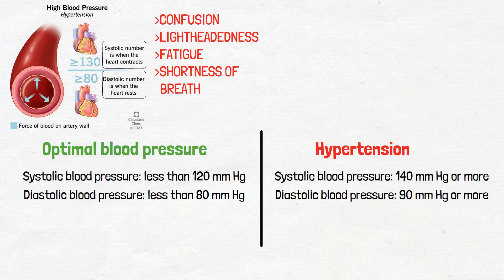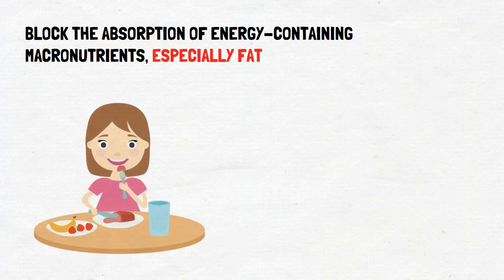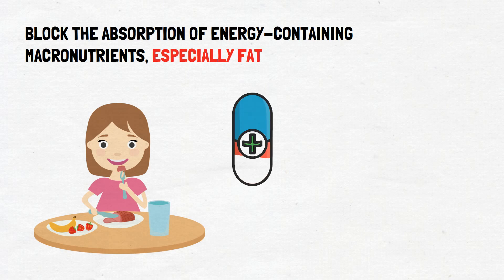One way to reduce energy intake and body weight is to block the absorption of energy-containing macronutrients, especially fat. Fat blockers are a type of dietary supplement designed to prevent the absorption of dietary fats into the body. These supplements work by binding to the fat molecules in the digestive system, forming a complex that is too large to be absorbed by the body. As a result, the fat is excreted from the body rather than being stored as adipose tissue.